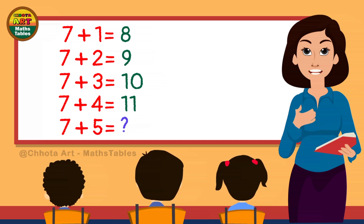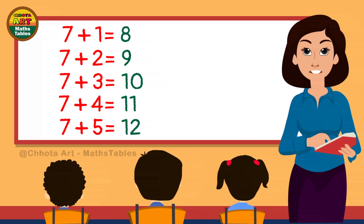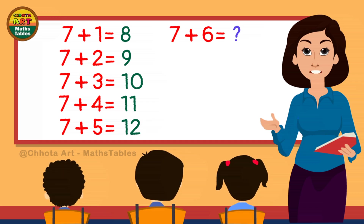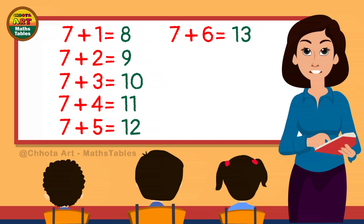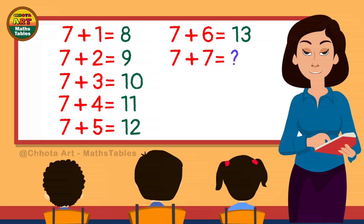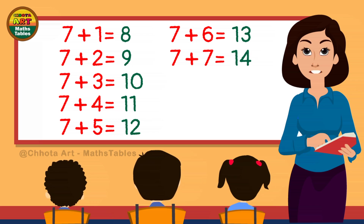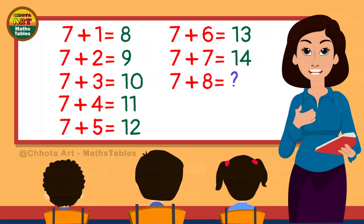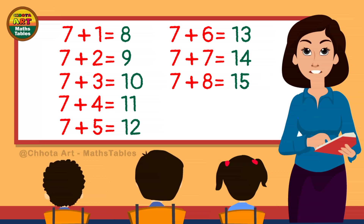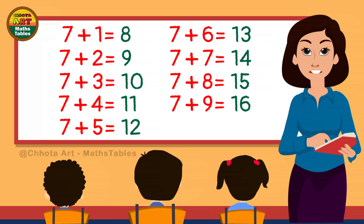7 plus 5 is... 7 plus 5 is 12. 7 plus 6 is... 7 plus 6 is 13. 7 plus 7 is... 7 plus 7 is 14. 7 plus 8 is... 7 plus 8 is 15. 7 plus 9 is... 7 plus 9 is 16.